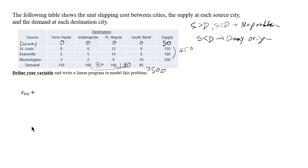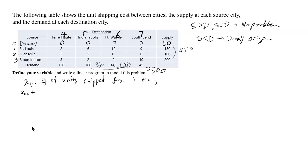To write down the linear program, you need to put numberings on the table — that's the most convenient way. We're going to put 0, 1, 2, 3 — 0 for the dummy. Usually if I don't have the dummy, I start with 1, 2, 3, and then 4, 5, 6, 7. Now it says to define your variable, so I'm going to define Xij as the number of units shipped from source i to destination j.